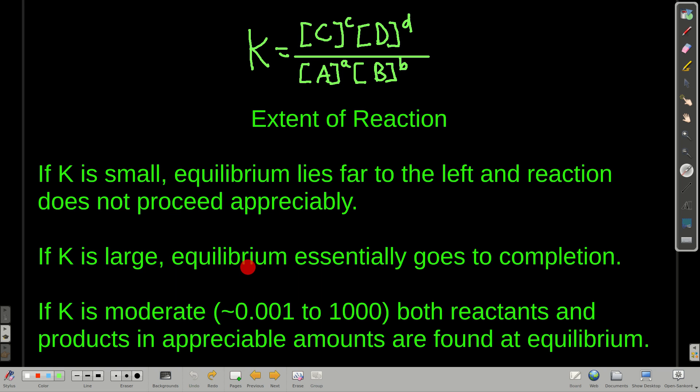If K is big, it's large, then just the opposite is true. Big equilibrium constant means the numerator is large, the denominator is small, so there are a lot of products and very few reactants. What that means is the equilibrium lies far to the right, and basically we say the equilibrium, or the reaction goes to completion.